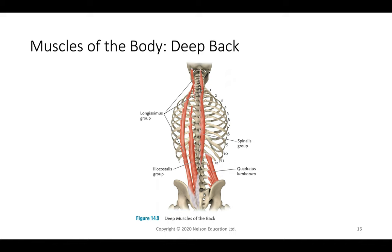The muscles of the deep back include the longissimus group, the iliocostalis group, the spinalis group, and the quadratus lumborum. These all connect the ribs, vertebrae, and their processes to the hips, holding the vertebrae in alignment.